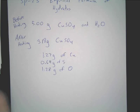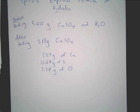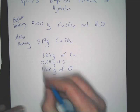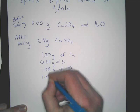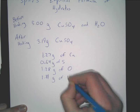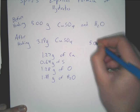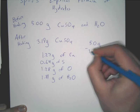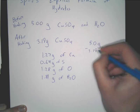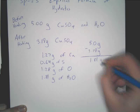What's the mass of water in the original compound? It's 1.81 grams. You can add down here 1.81 grams of H₂O. You figure that out because it's 5.0 grams minus 3.19 grams, and that gives you 1.81 grams.